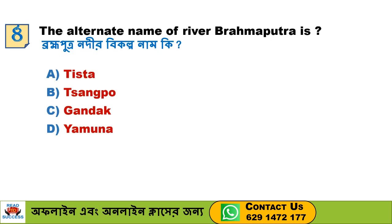Next question: The alternate name of river Brahmaputra is — Option A. Teesta, Option B. Tsangpo, Option C. Gandak, Option D. Chambal. Option B, Tsangpo, is the correct answer.